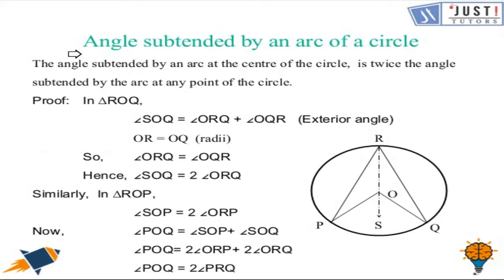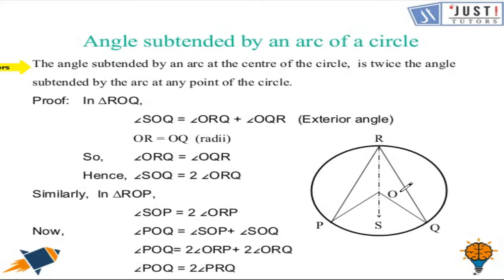Now let's proceed with the angle subtended by an arc of a circle. This property states that the angle subtended by an arc at the center of a circle is twice the angle subtended by the arc at any point of the circle. What this means is that angle POQ is twice of angle PRQ.